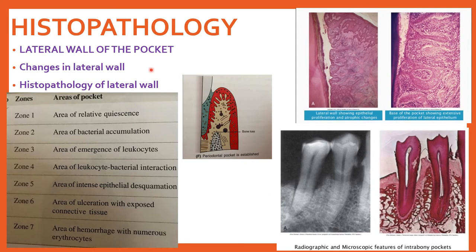Histopathologically, there are three things to examine. The lateral wall, or soft tissue wall or gingival wall, forms the lateral wall of the periodontal pocket. The zones of the lateral wall are: zone 1 — area of relative quiet; zone 2 — bacterial accumulation; zone 3 — emergence of leukocytes; zone 4 — interaction between leukocytes and bacteria; zone 5 — epithelial desquamation; zone 6 — ulceration; zone 7 — area of hemorrhage with numerous erythrocytes.